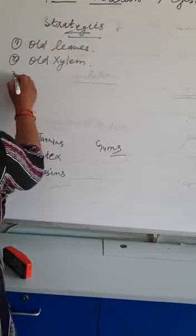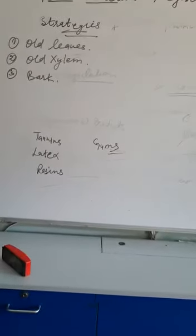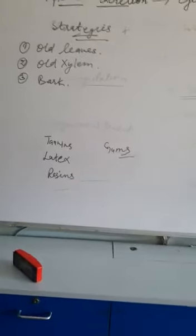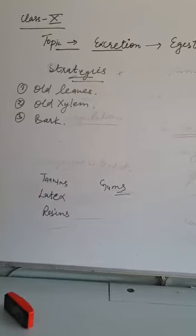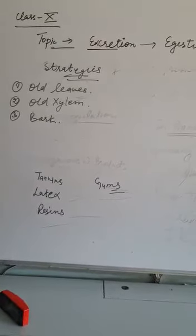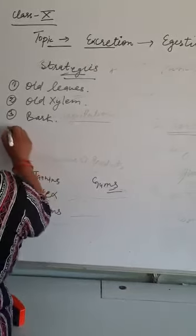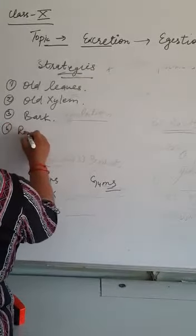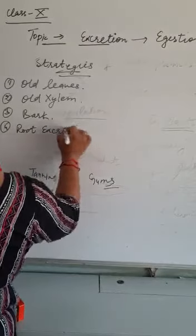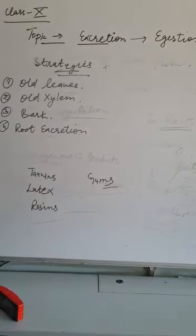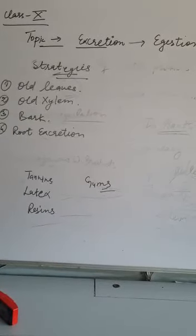Third is bark. Bark contains dead cells which are peeled off periodically, and tannins and other waste products are removed with it. Fourth is root excretion - some waste substances are excreted in the region of their roots.